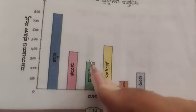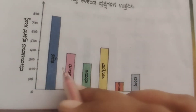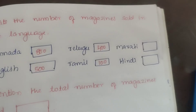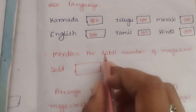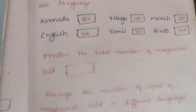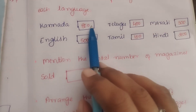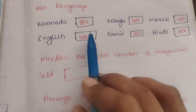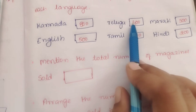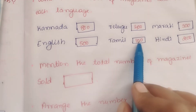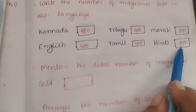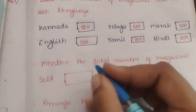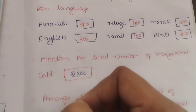Marathi is 300 and Hindi is 200. Mention the total number of magazines sold: 1800 plus 200 is 2000, plus 300 is 2300. So 2300 magazines are sold in total.